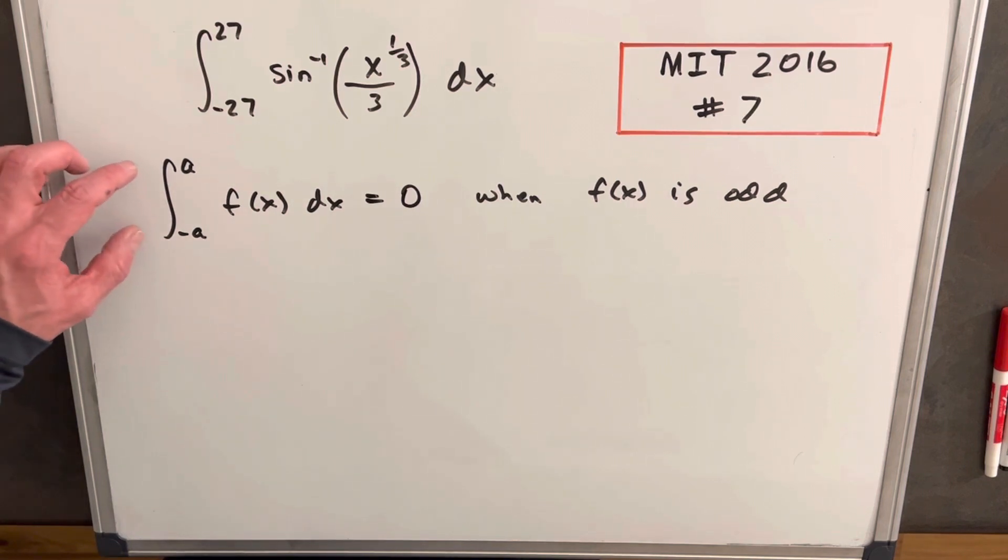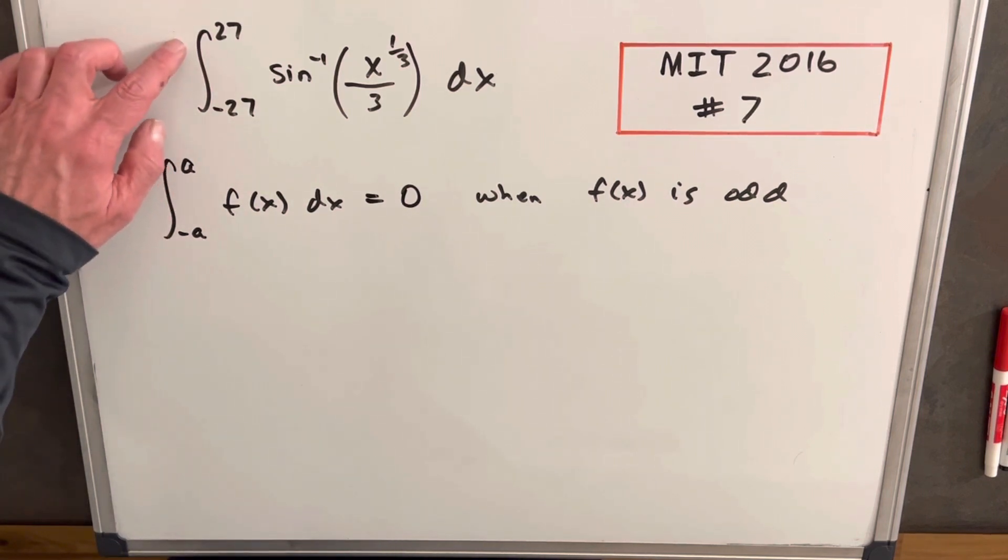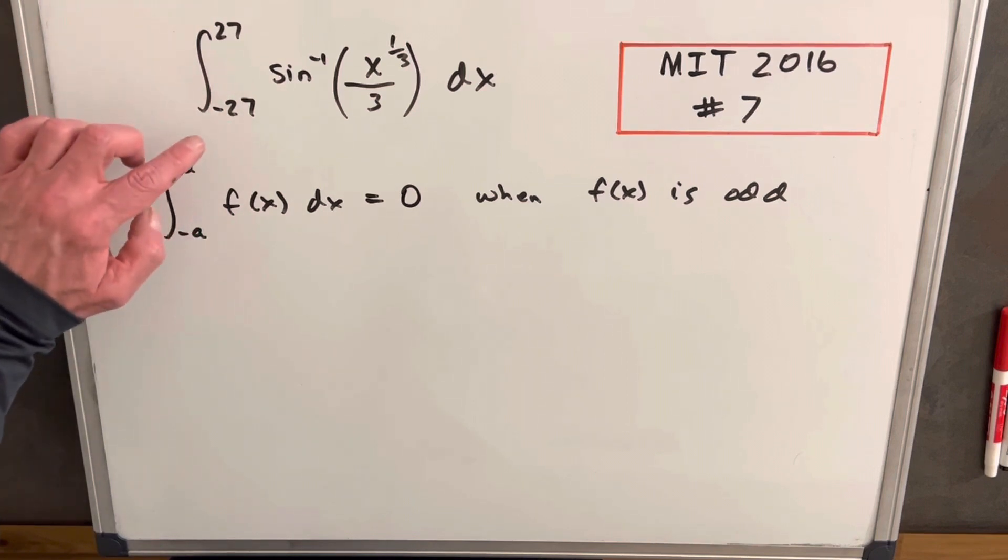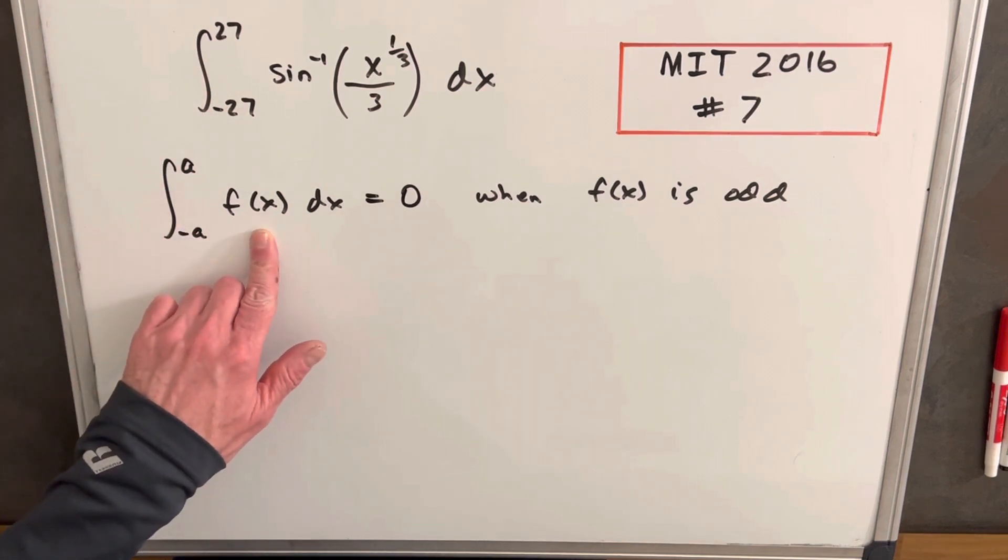But what you need to validate is the bounds, so you get the negative of the top bound on the bottom, and then this function has to be an odd function.